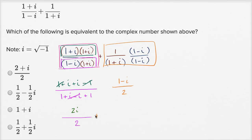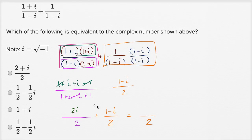So this has now become 2i/2 plus (1-i)/2. The denominator is two. Adding the real parts: there's one. Adding the imaginary parts: 2i minus i is i. So the result is (1+i)/2.